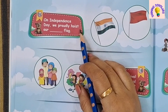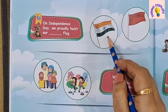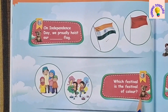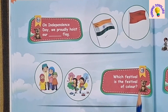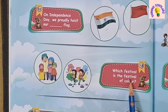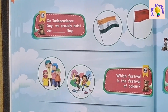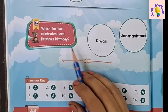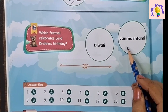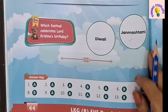On Independence Day we proudly hoist our national flag — this is the national flag, also known as the tri-colour flag. Which festival is the festival of colours? Holi is the festival of colours. Which festival celebrates Lord Krishna's birthday? Janmashtami. And at the end is the answer key.